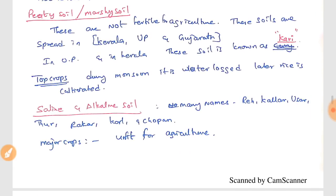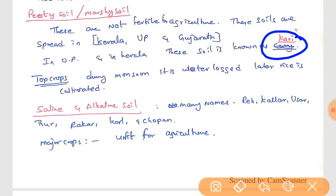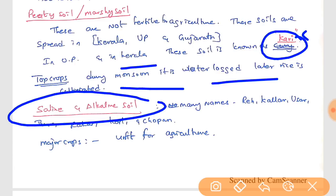Peaty or marshy soil is not fertile for agriculture and is called 'kari' in some parts of the country, such as Uttar Pradesh and Kerala. These soils are usually waterlogged in nature — during the monsoon season, these lands are filled with water, and after the monsoon dries up, people cultivate this land. There is also saline soil, which is not useful for agriculture.